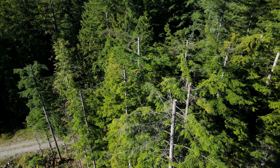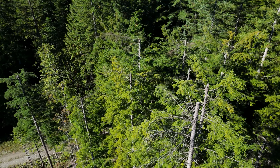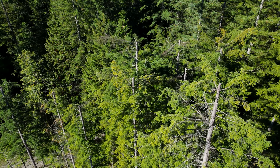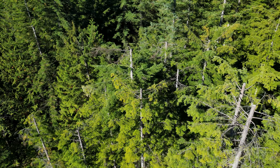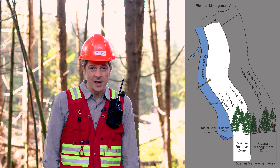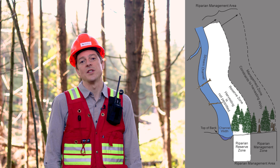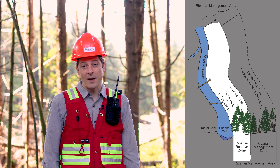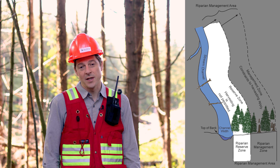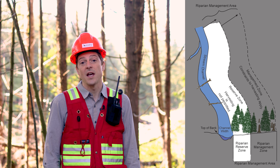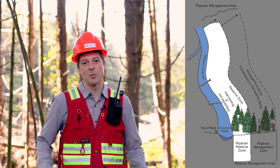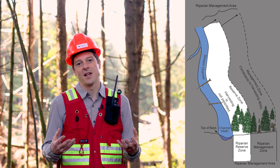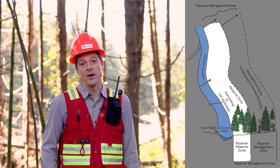Sometimes trees in a riparian area can be topped, where the tops of the trees are cut off to keep the tree in place but make the crown smaller so it's less likely to catch wind and be blown over. The riparian reserve zone itself has objectives to maintain wildlife habitat structures such as habitat trees and cover, maintain food sources, maintain coarse woody debris — essentially to protect the aspects that are important to a riparian area.